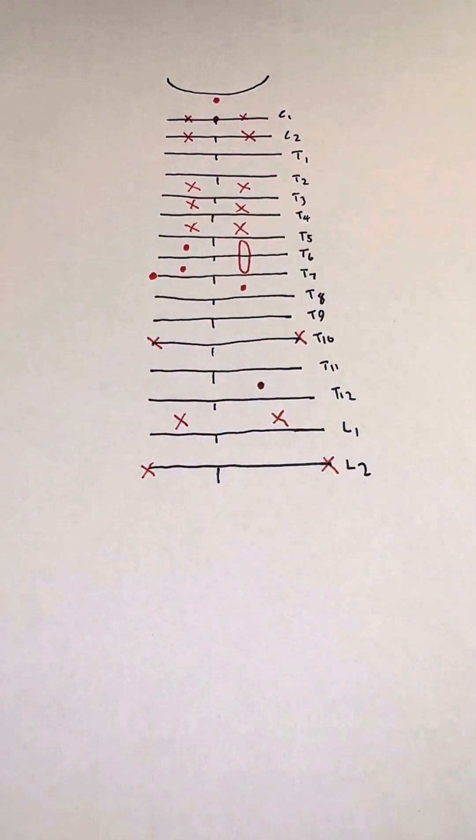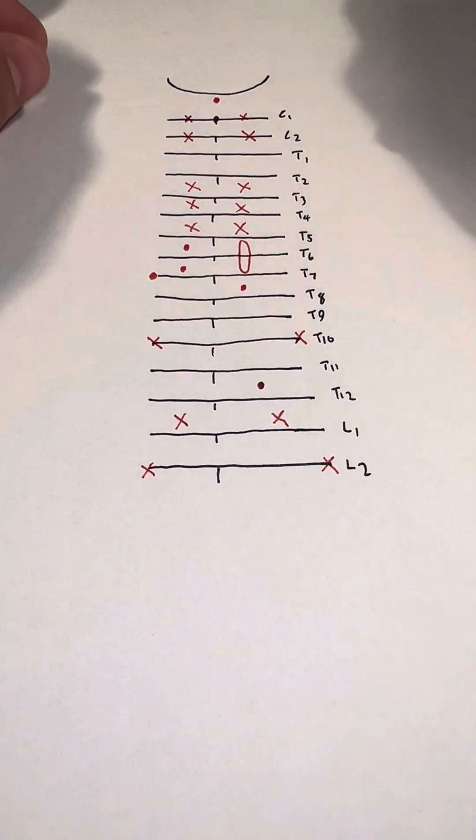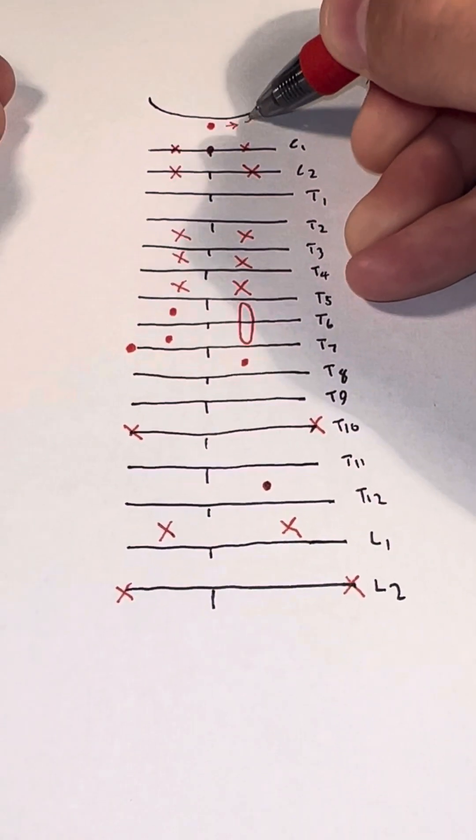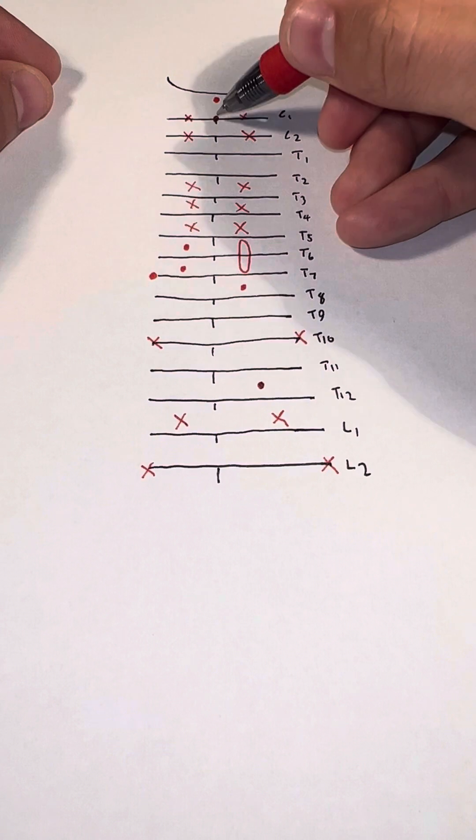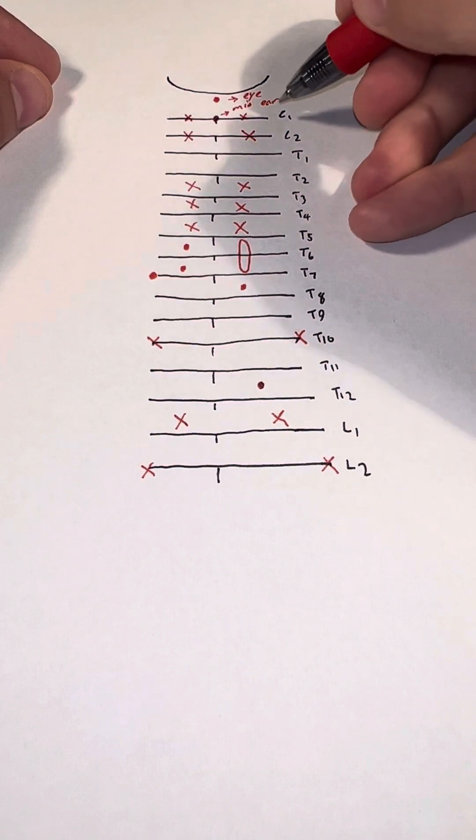At this point, we have all our points filled out. Now we need to assign different names to them. Starting from the top, this represents the eye. This dot in the middle represents the middle ear. These Xs represent the tonsils.